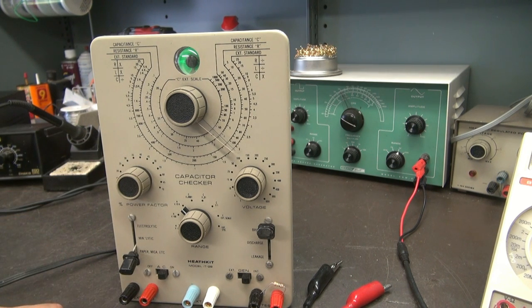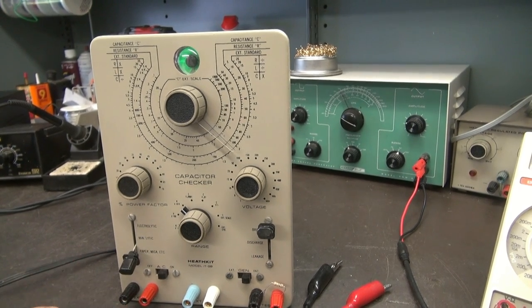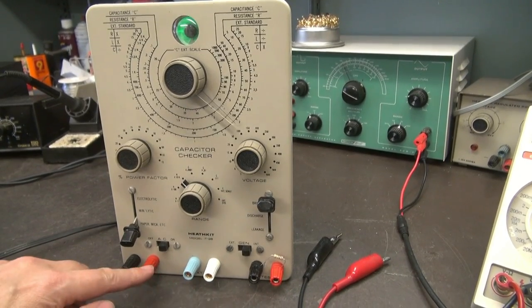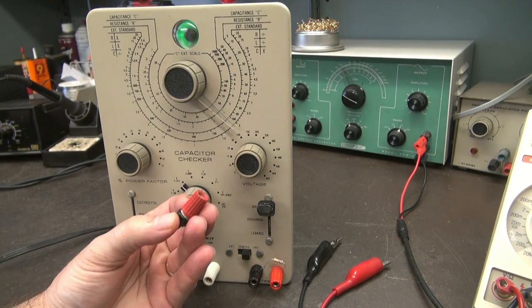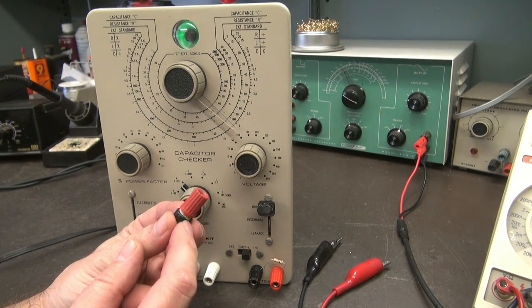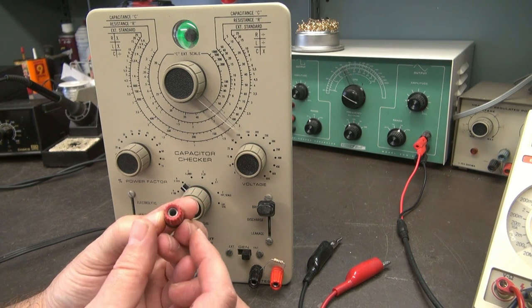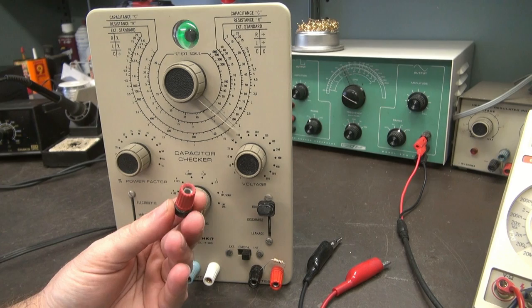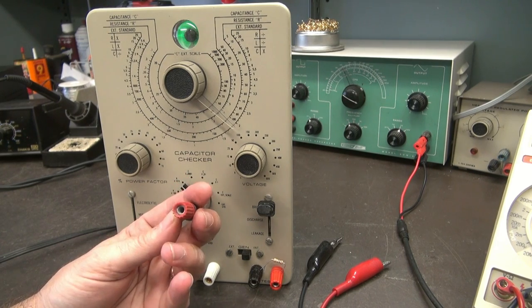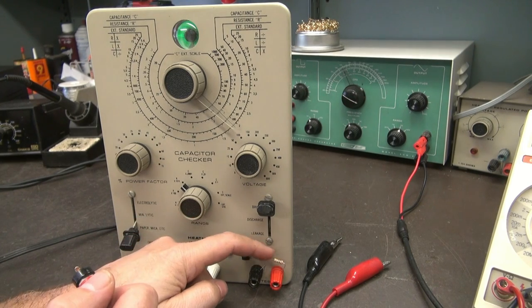When I first got it, the jacks down here, the input banana jacks, were all seized up. They wouldn't even move. Here's one of them, the original that I pulled off. You can see the aluminum here has corroded so badly that you can't undo the binding post. Because of that, you can't hook up your test leads and you can't hook up capacitors.